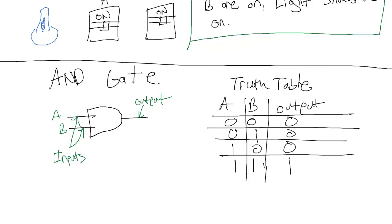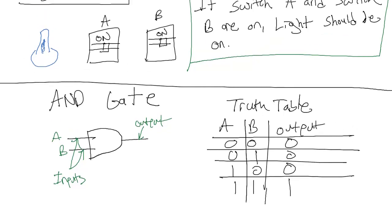So if we applied one to A and one to B, we'd get an output. Any other case, let's say A is zero and B is zero, we get no output. So this AND gate can actually be used to solve this question. If switch A and switch B are on, then turn the light on.